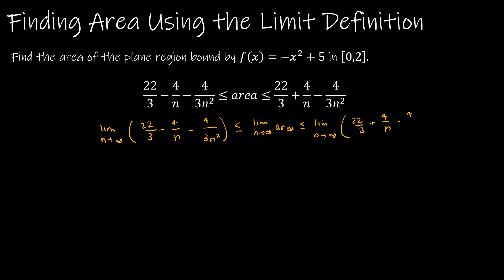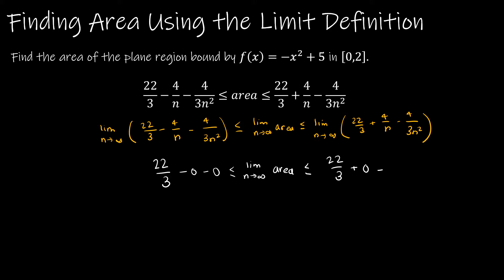I think you'll see exactly what's going to happen. If I take the limit of 22/3 as n approaches infinity, that's 22/3. What about the limit of 4 divided by infinity? Infinity gets very large, so I'm taking 4 divided by an increasingly large number, so the limit is 0. And 4 over 3 times n squared — again, that's 4 over a very large number, which turns into 0. In the middle I still have the limit as n approaches infinity. On the right, the limit of 22/3 is 22/3, the limit of 4 over infinity is 0, and the limit of 4 divided by 3n squared is 0.